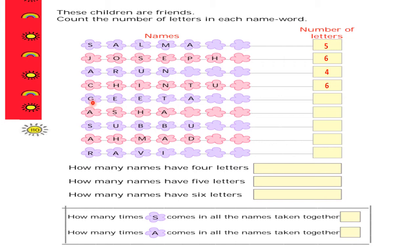Now G-E-E-T-A, that is Geeta. Let's count how many letters: one, two, three, four, and five. So let's write five. Now A-S-H-A, that is Asha. Let's count the number of letters: one, two, three, and four. So let's write four.